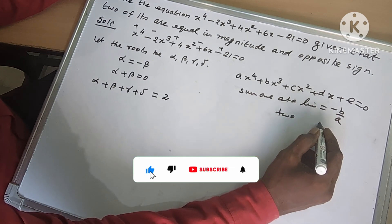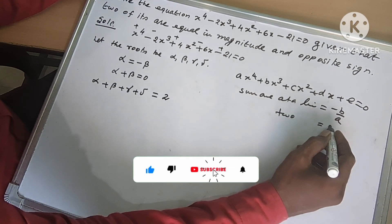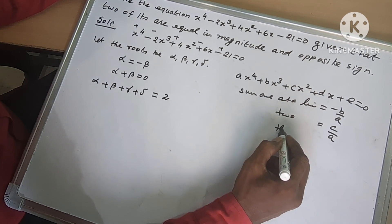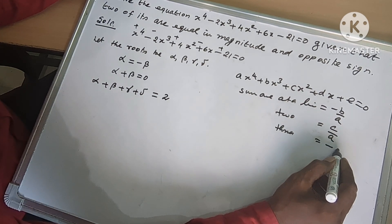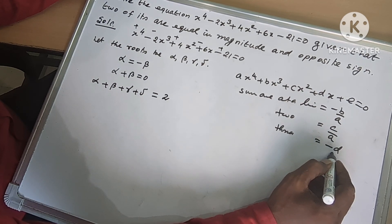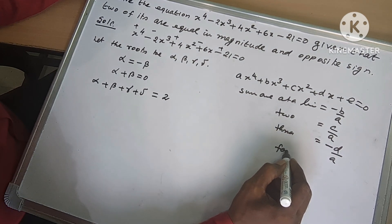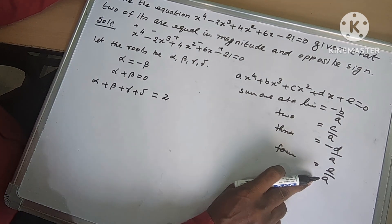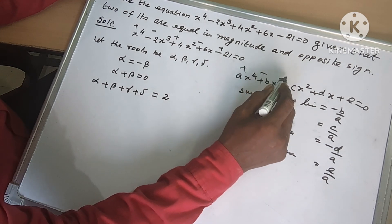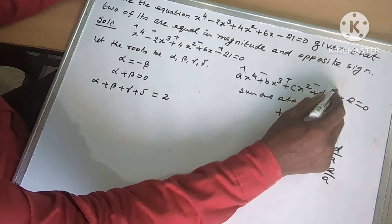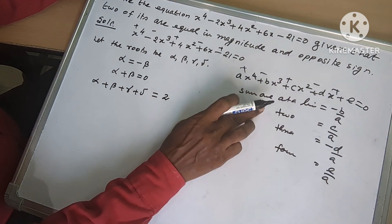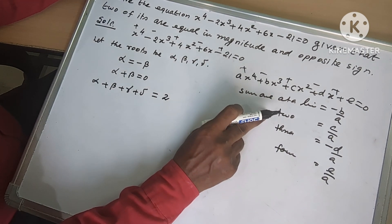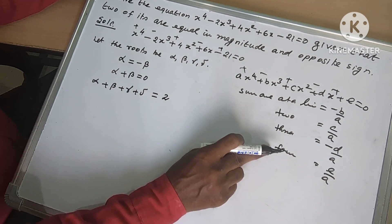Sum of roots 2 at a time is c by a. Sum of roots 3 at a time is minus d by a. Sum of roots 4 at a time is plus e by a. So this is plus, minus, plus, minus, plus — for 1 at a time, 2 at a time, 3 at a time, and 4 at a time.